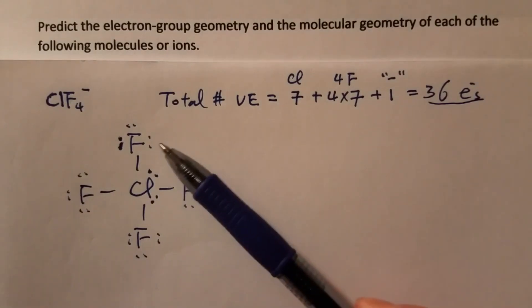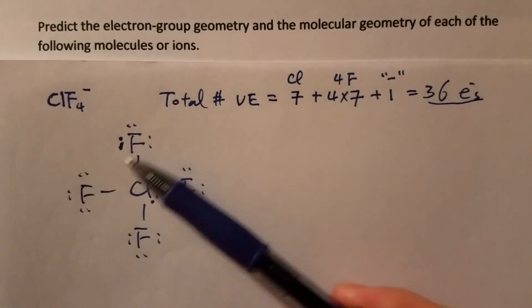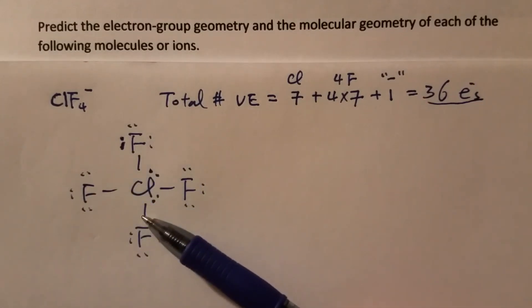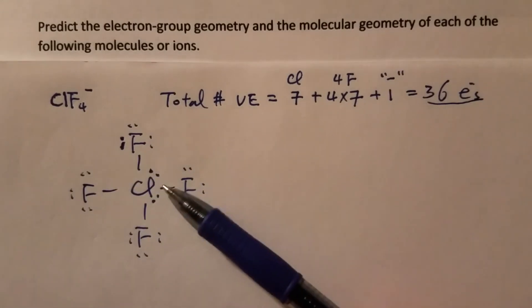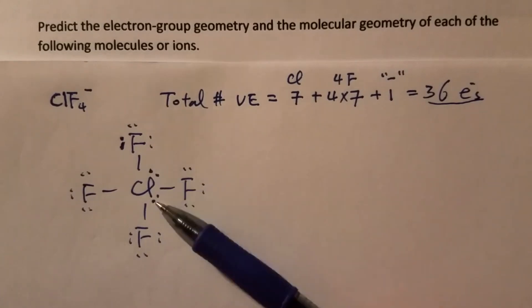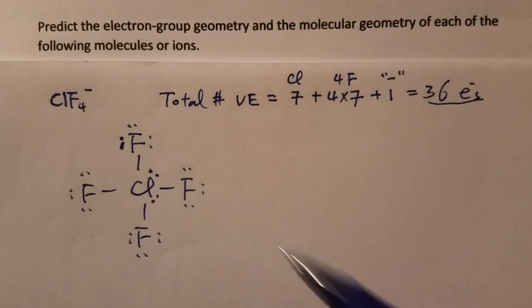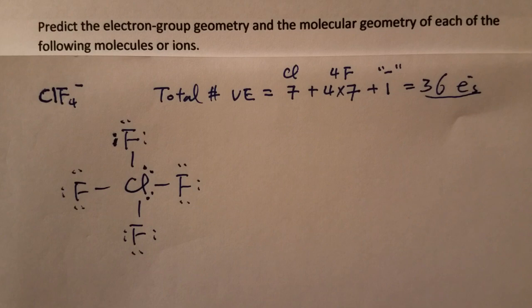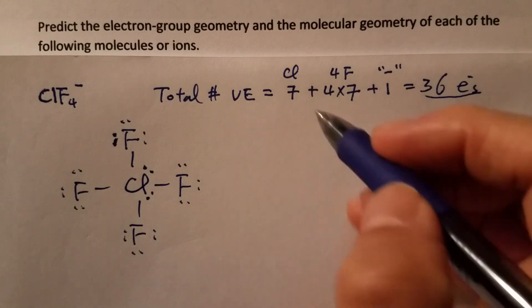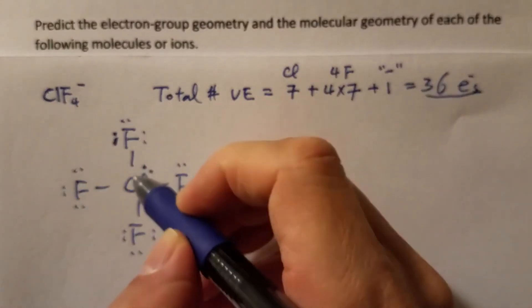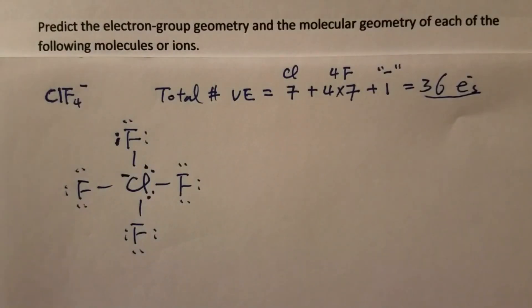Now let's count the total number of electron groups surrounding the central atom, because that determines the electron group geometry. That's four bonding groups and two non-bonding groups, total of six. So if it's six, then the electron domain geometry should be octahedral. Before we move on, we have to assign that negative charge, which obviously should be around the chlorine.